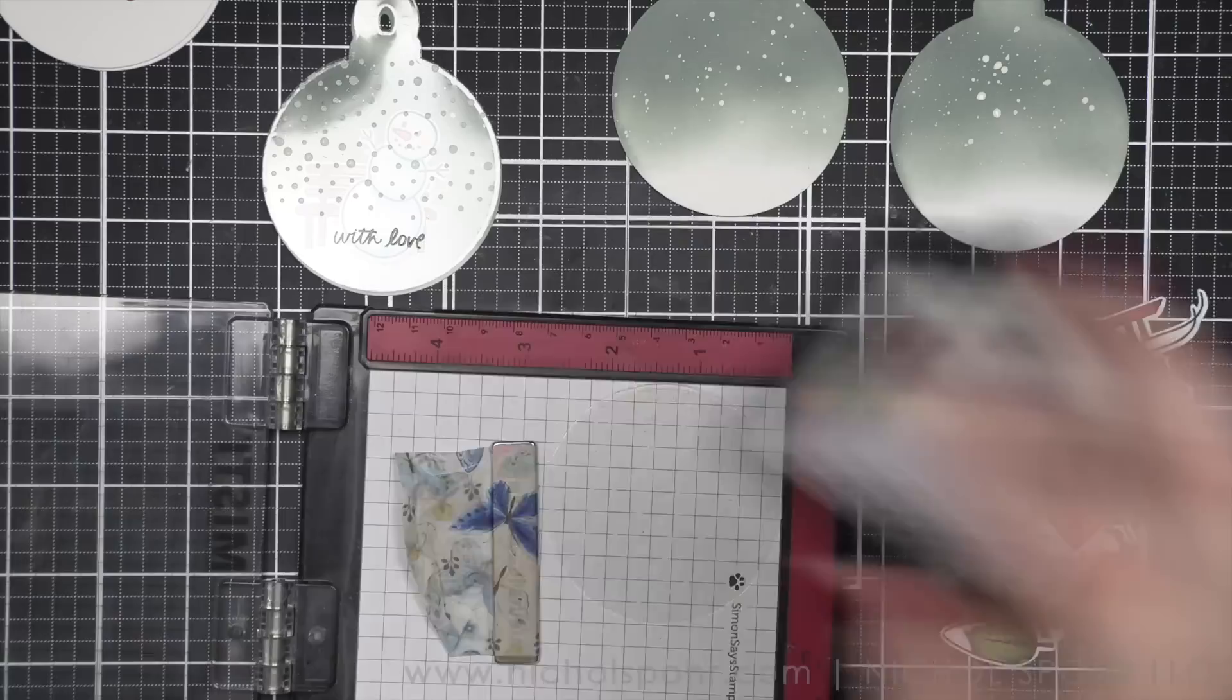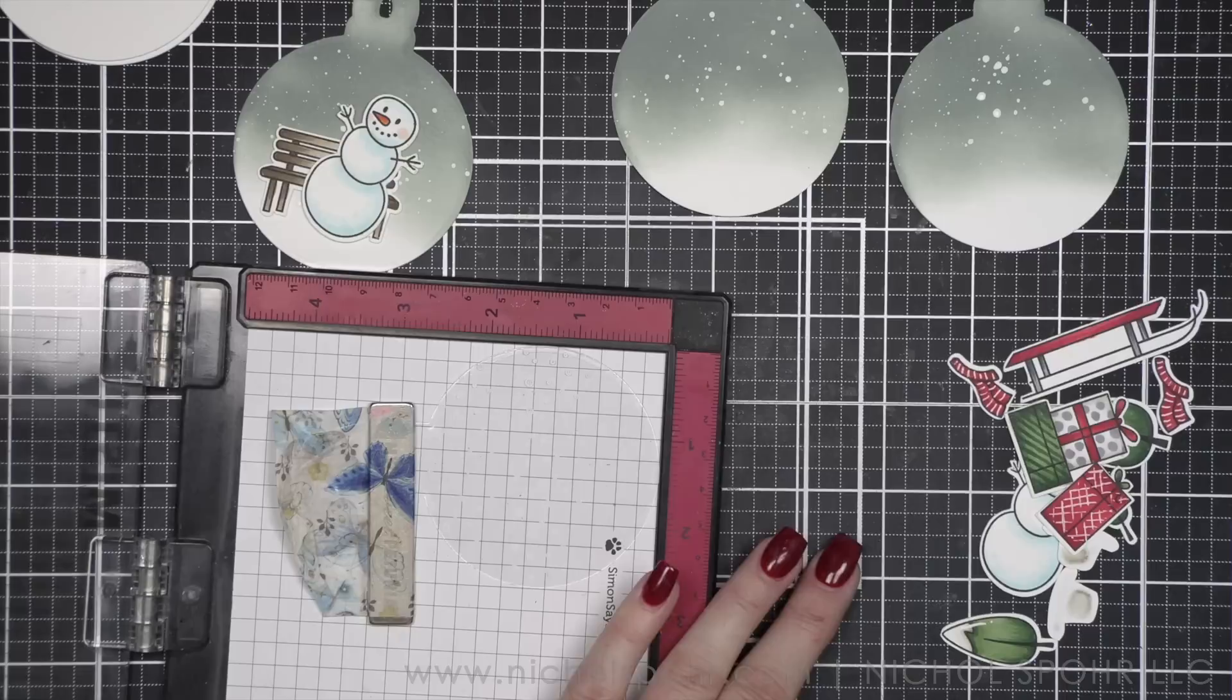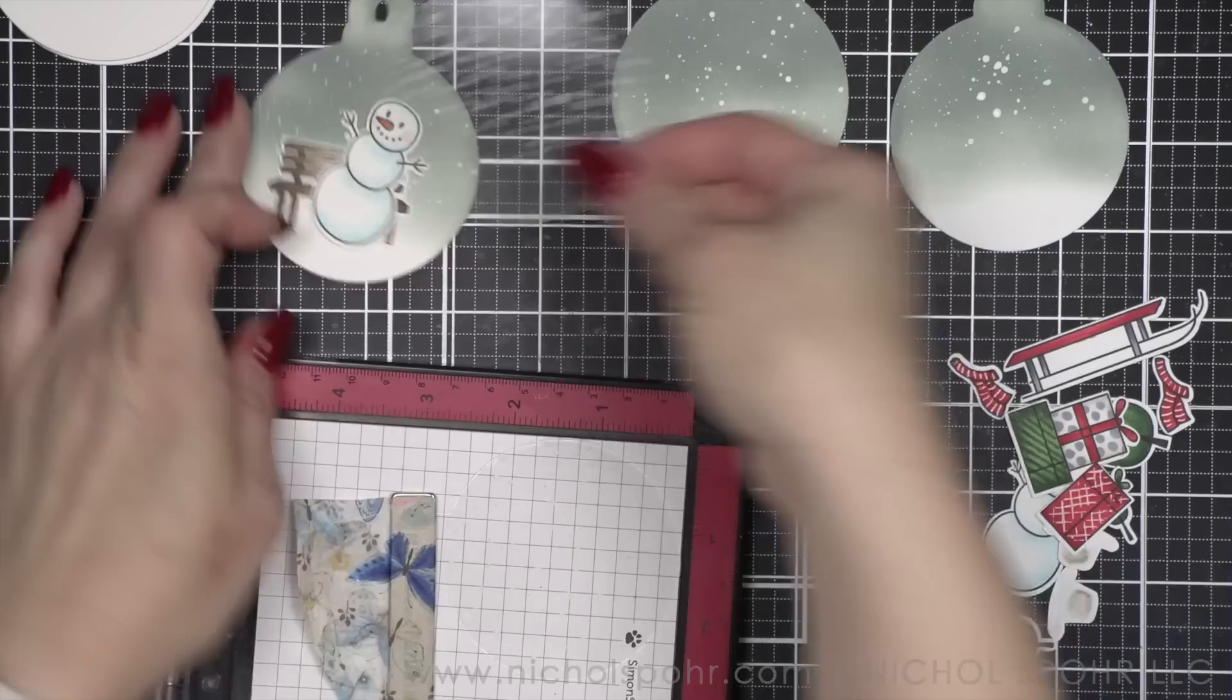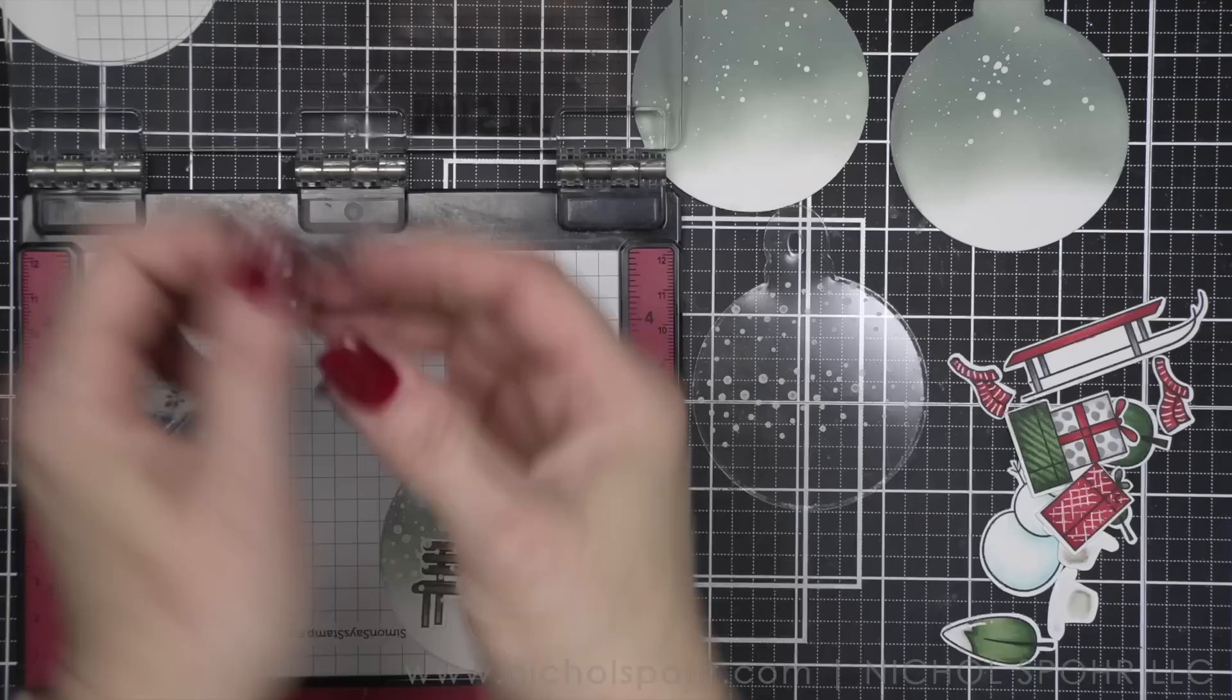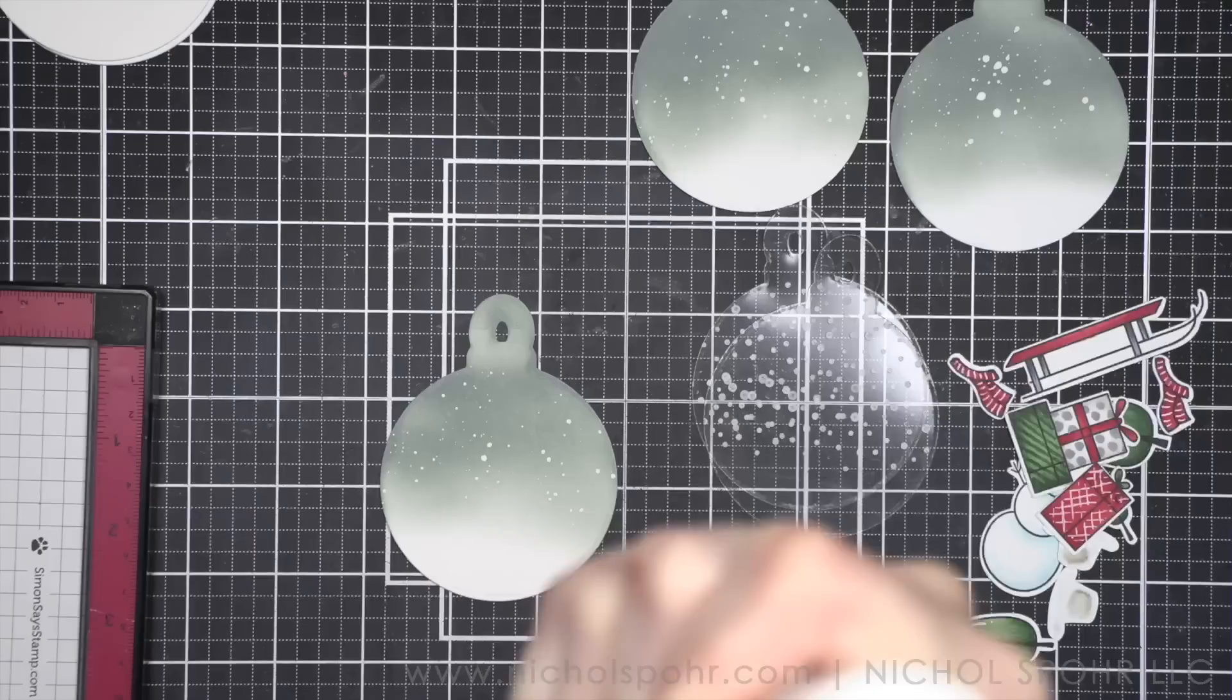Now, I didn't really stamp that exactly where I wanted, so I did take a little stamp cleaner, and very carefully, because I don't want to wipe away the white Stazon, the snow, I did wipe away the With Love, and I am going to redo that. So let me put everything back in my MISTI. Let's go ahead and adhere everything first.